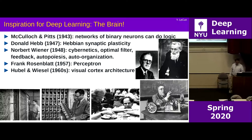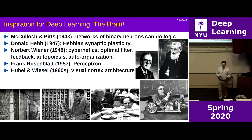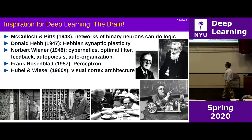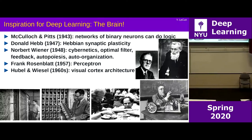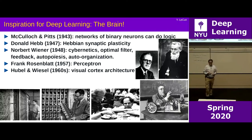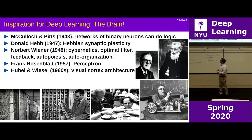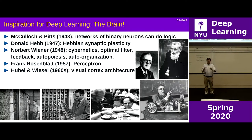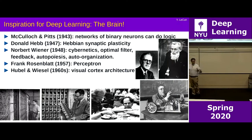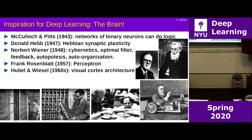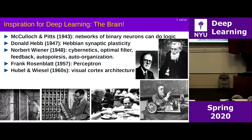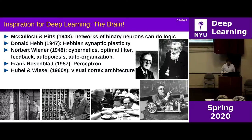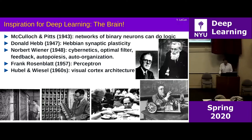That led Frank Rosenblatt to imagine learning algorithms that modified the weights of very simple neural nets. The perceptron was not a three-line Python program — it was a gigantic physical analog machine with wires, optical sensors, and neurons that could compute a weighted sum with weights that could be adapted. The weights were potentiometers with motors on them for the learning algorithm, so it was electromechanical. He's shown holding a module of eight motorized potentiometers.